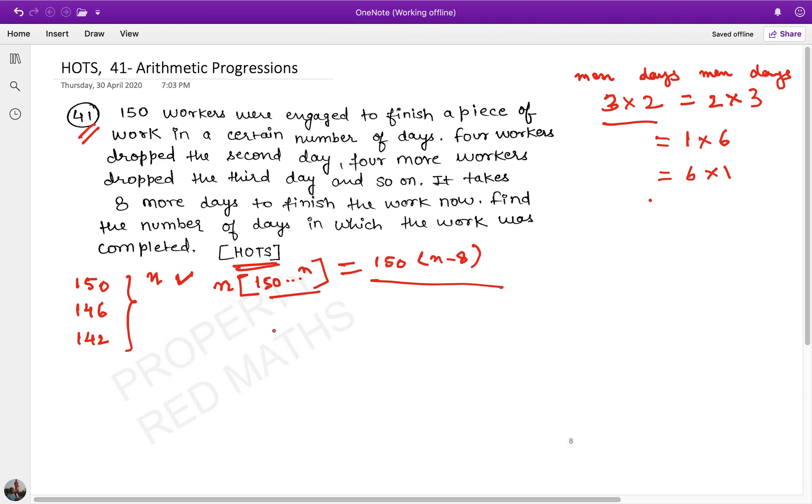So 150 people on day 1, 146 on day 2, 142 on day 3... This is our arithmetic progression (AP). 150 is our first term. Our d (common difference) is minus 4, because the value is decreasing by 4. So n is the number of days it will take to complete the work.